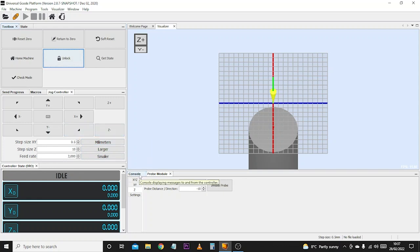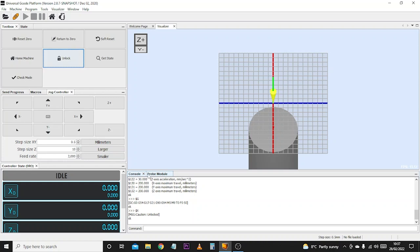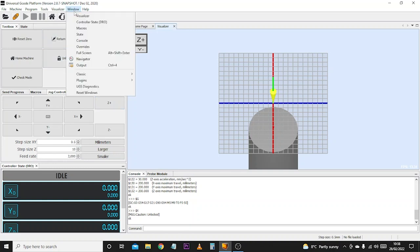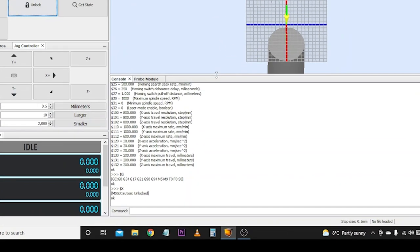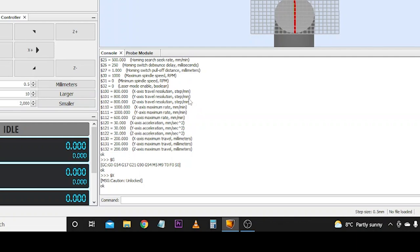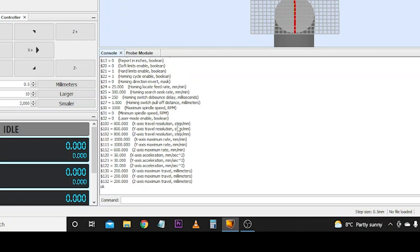Next thing we're going to do is come over to the console panel. If you can't find any of these panels for any reason, you'll find them up in the Windows menu where you can see we've got console visualized and you can turn them on and off as needed. Now, the first thing I want to show you is the settings that we'll be editing today.